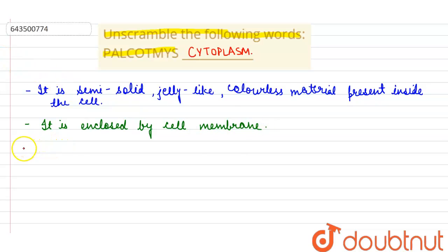Cytoplasm is present between the nuclear membrane and the cell membrane. Most of the cellular activities occur in the cytoplasm with the help of various cell organelles present in it.